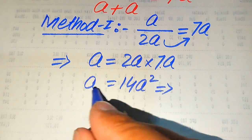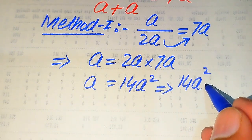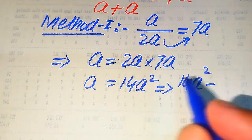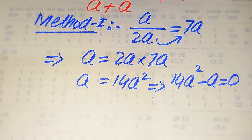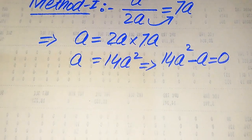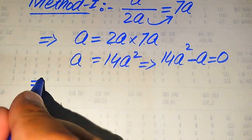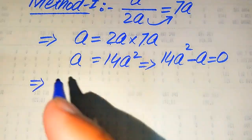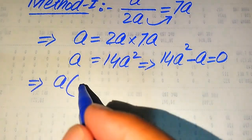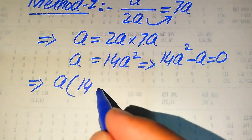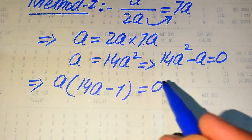We move this a to the right hand side, so it becomes 14a squared. This positive a, when moved to the right hand side, becomes negative a, and this whole equation equals zero. Both terms involve a, so we take common a from both terms, giving us a times (14a minus 1) equals zero.